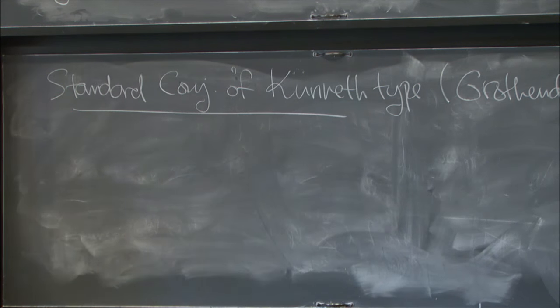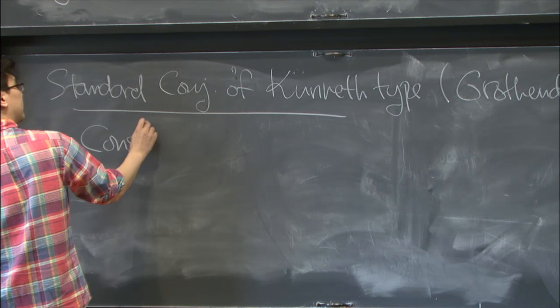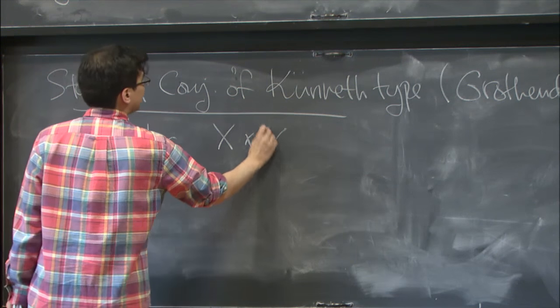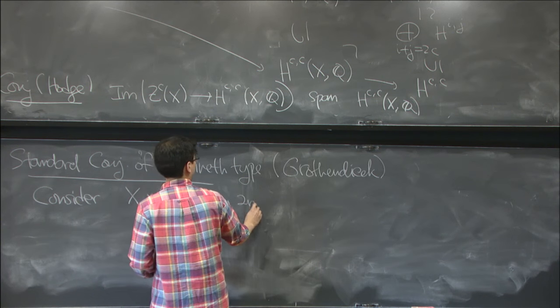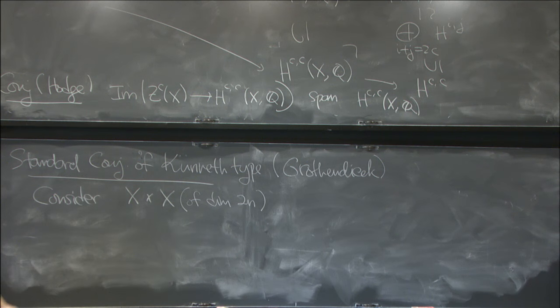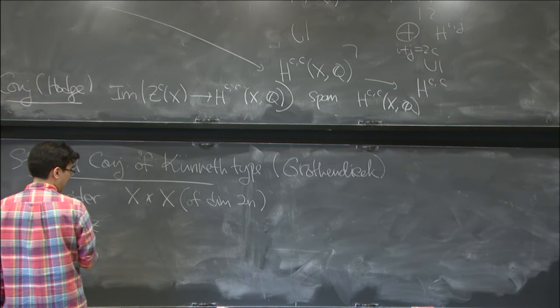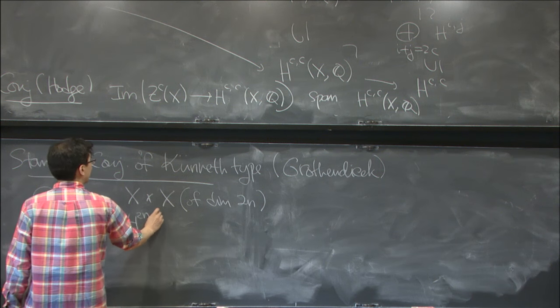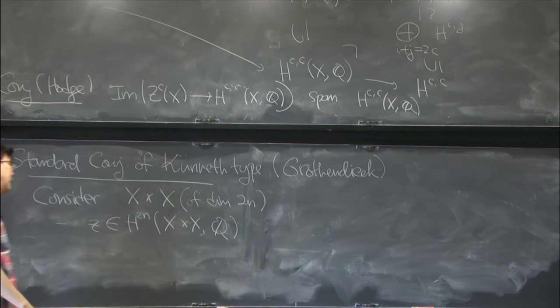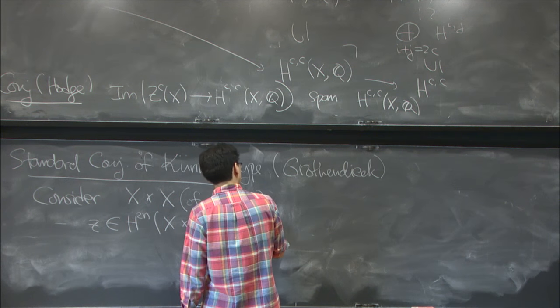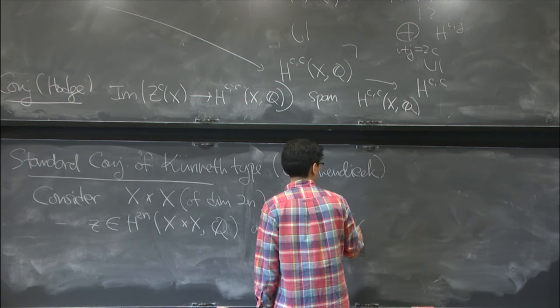So starting from this projective smooth variety of dimension N, we can consider X cross X, so as dimension 2N, and so it depends on two things. First of all, if you have a cohomology class of degree 2N on this self-product with Q coefficients, then it acts on the cohomology of X itself, that's on H*XQ.